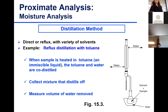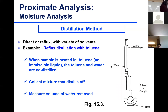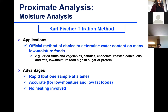The distillation method is not commonly used anymore, but it used to be used for moisture estimation. You place your sample with toluene and they are co-distilled. The water from your sample and the solvent evaporate together when heated, then both water and toluene are collected after distillation and you measure the volume of the water.